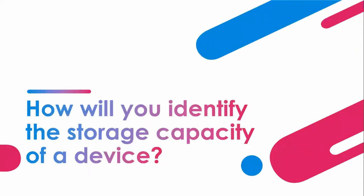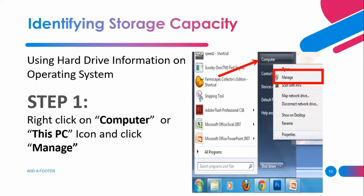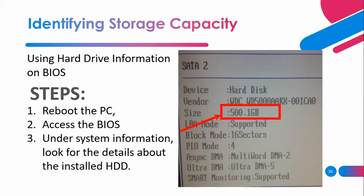How will you identify the storage capacity of a device? Using hard drive information on the operating system: right-click on the Computer or This PC icon and click Manage. Using hard drive information on BIOS — Step 1: reboot the PC. Step 2: access the BIOS. Step 3: under system information, look for the details about the installed hard disk drive.